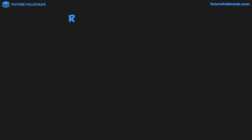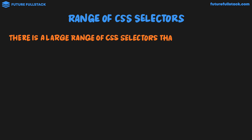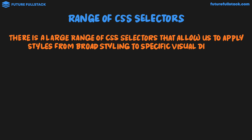But there are in fact a range of CSS Selectors — a large range that allows us to apply styles from broad styling to specific visual details. I've broken this down into four categories. The first are Basic Selectors. These include Element Selectors and things like IDs and Classes, which we'll be talking about soon. Basic Selectors are used a lot — they are the most common type of selector used.